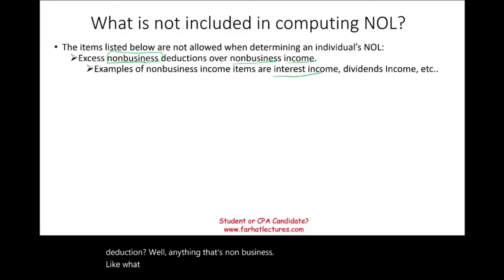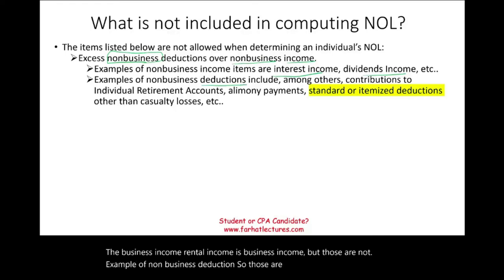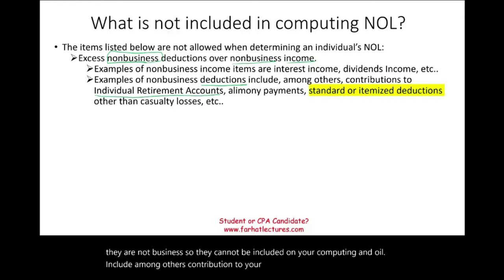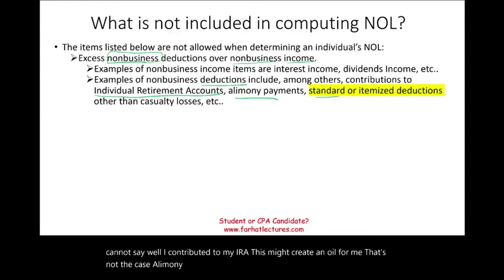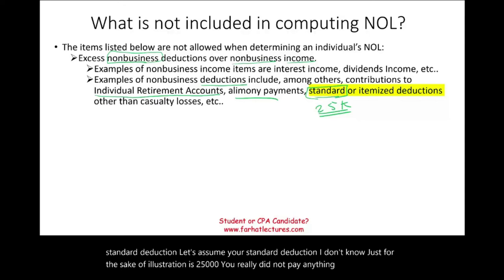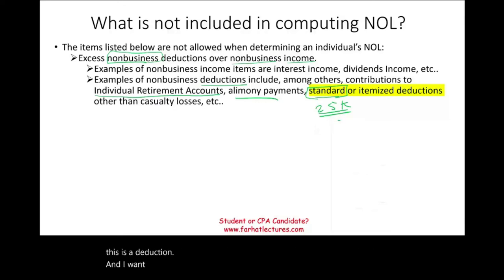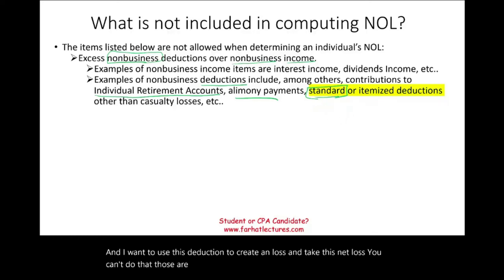Examples of non-business deductions — deductions that cannot be included when computing NOL — include contributions to your individual retirement account (IRA), alimony payments, and the standard or itemized deduction. Think about the standard deduction: you didn't actually pay anything — it's essentially a phantom deduction given to you by the IRS. You cannot say this deduction creates a net loss that you want to carry forward. Those are not allowed when computing NOL.